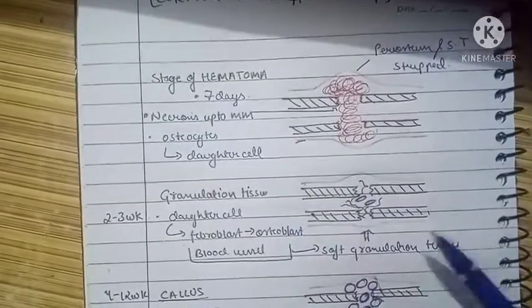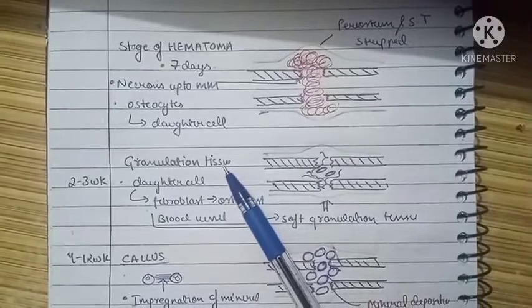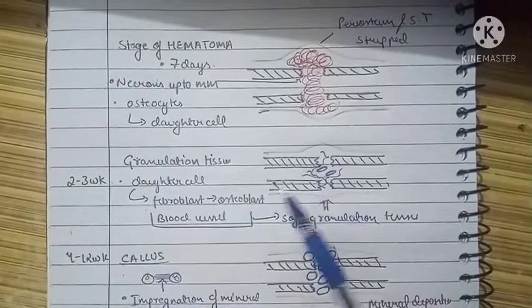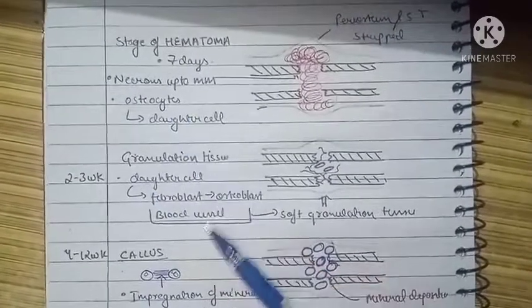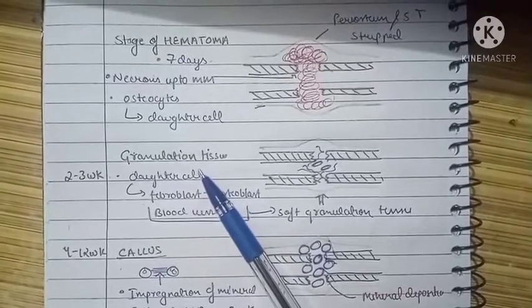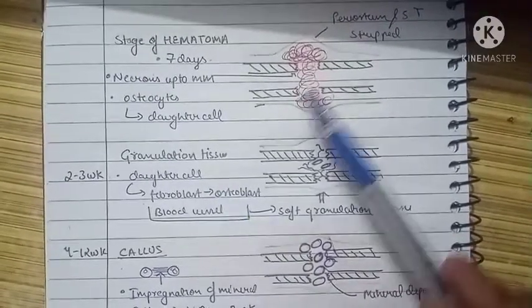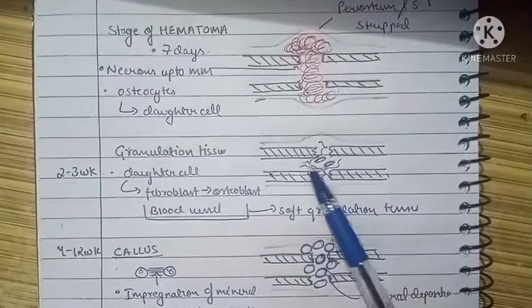The next stage is formation of granulation tissue. The daughter cells from osteocytes, under the effect of chemokines and different cytokines produced due to blood and inflammation, result in formation of fibroblasts. These fibroblasts get converted into osteoblasts.